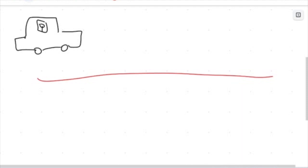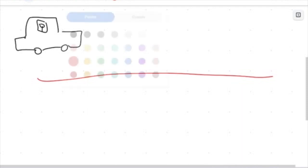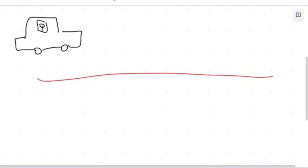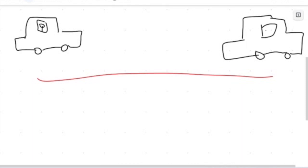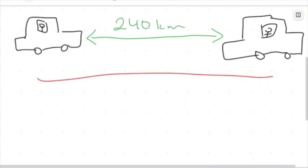Let's say you are here and you end up a little bit further down the highway at some later point in time. We measure speed by looking at how far we've actually traveled. Let's say along this highway I traveled 240 kilometers. That's one unit of measurement.